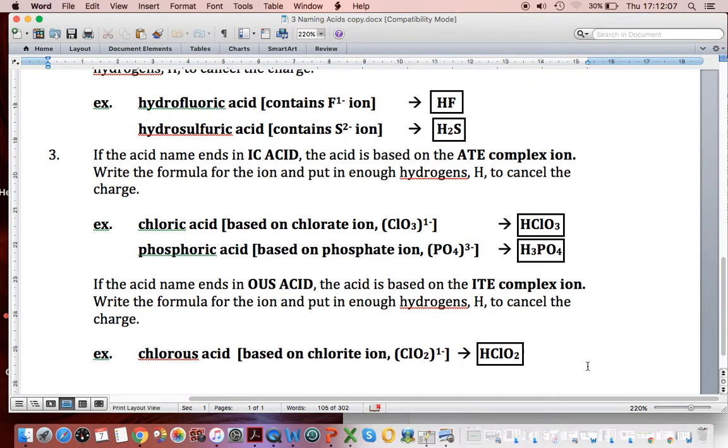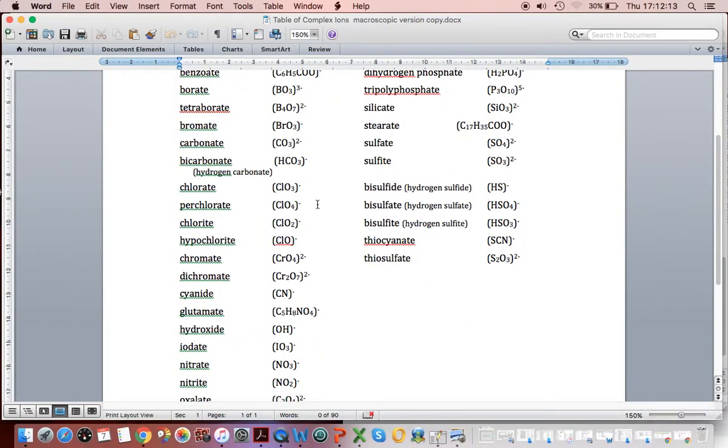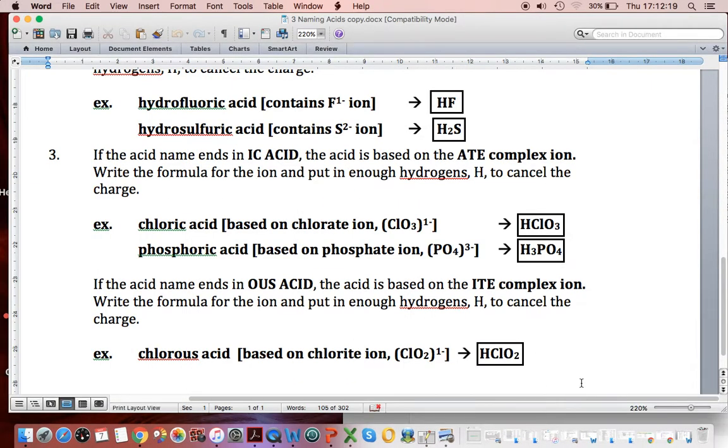If we have -ous acid, so here it says chlorous acid. That's going to be based on the chlorite. So somewhere here, there's chlorate. There's our chlorite. Again, it's going to be one minus. So it's going to only require one H to balance out the charge.